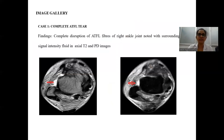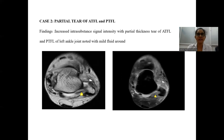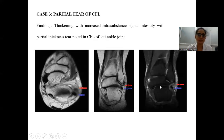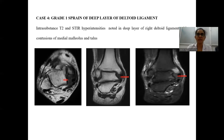Coming to the image gallery: this case shows a complete anterior talofibular ligament tear with complete disruption of the anterior talofibular fibers of the right ankle joint with surrounding signal intensity changes, seen on T2 and PD images. The next case shows a partial tear of the anterior talofibular and posterior talofibular ligaments with increased signal intensities and partial thickness tear of both ligaments of the left ankle with mild fluid. This is followed by a partial tear of the calcaneofibular ligament showing thickening and increased signal intensity. A Grade 1 strain of the deep layer of the deltoid ligament shows intersubstance T2 hyperintensity in the deep layer of the right deltoid ligament, with associated bone contusion of the medial malleolus and talus.